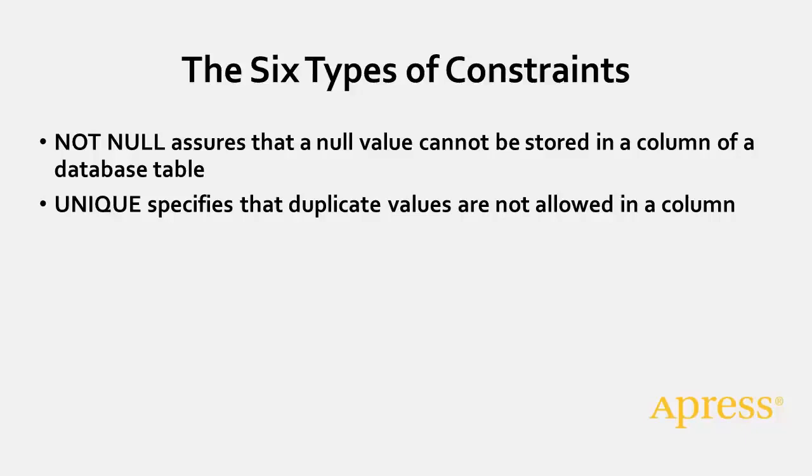The UNIQUE constraint specifies that there may be no duplicated values in a column. For example, if the UNIQUE constraint were applied to the LAST NAME column and there was already a SKYWALKER in the table, you would be prevented from adding another record with a LAST NAME of SKYWALKER.